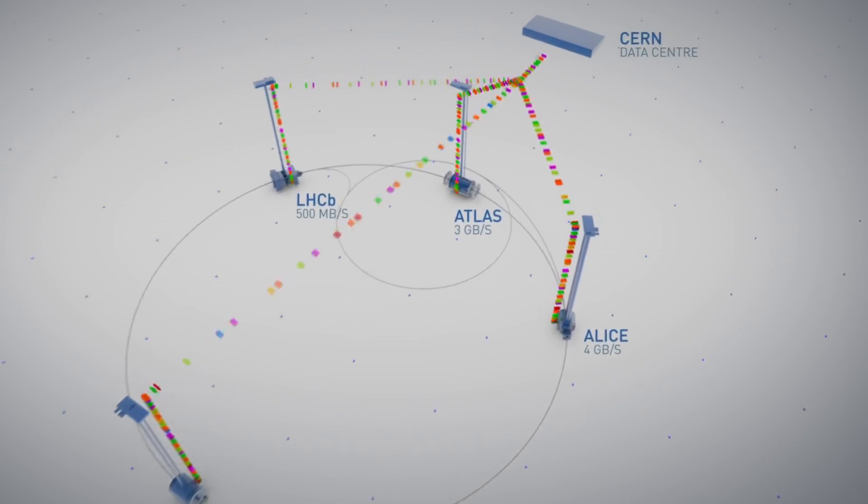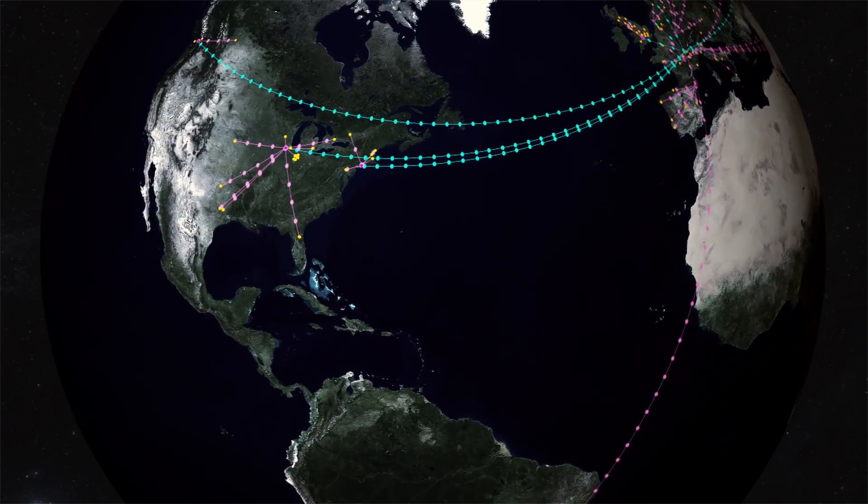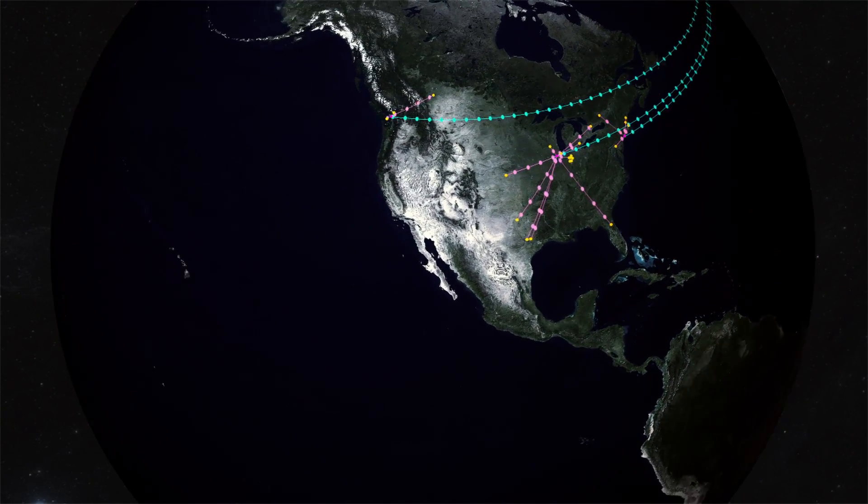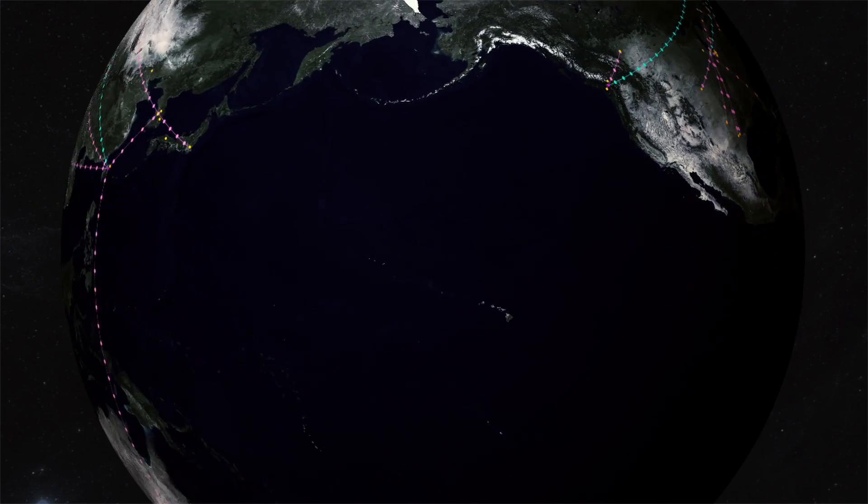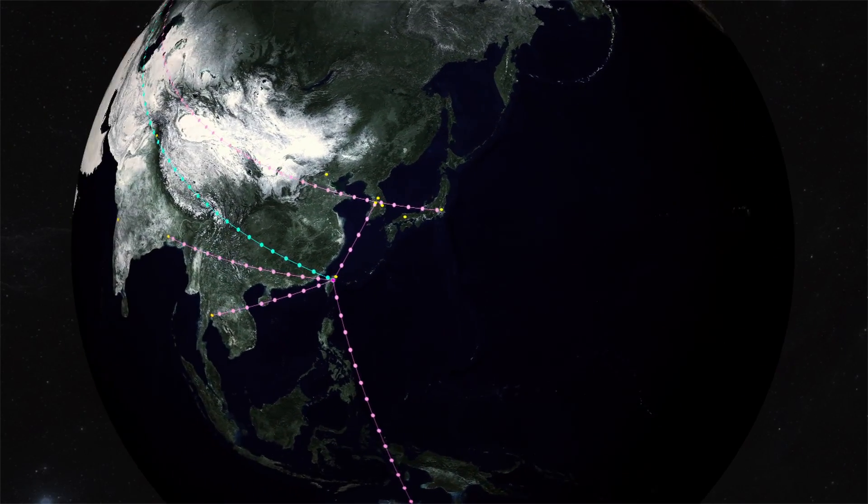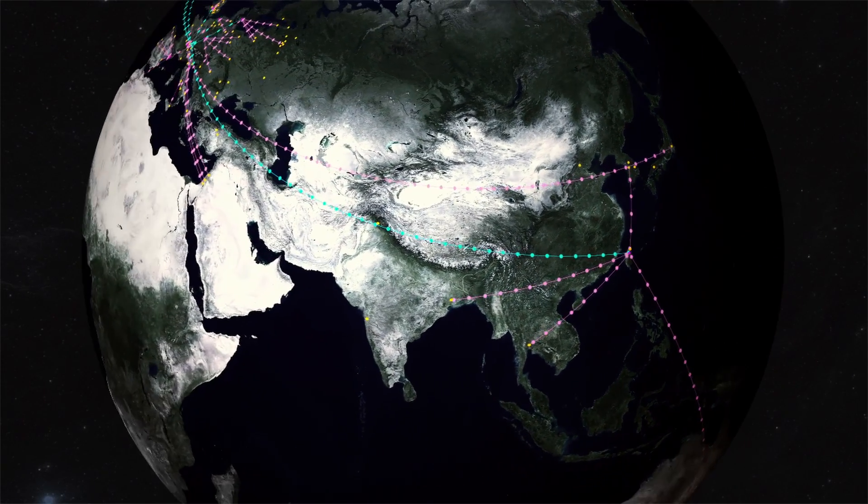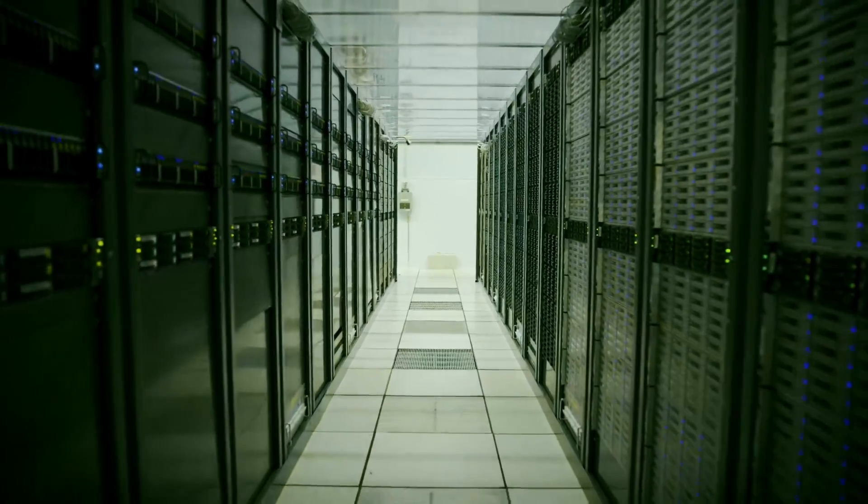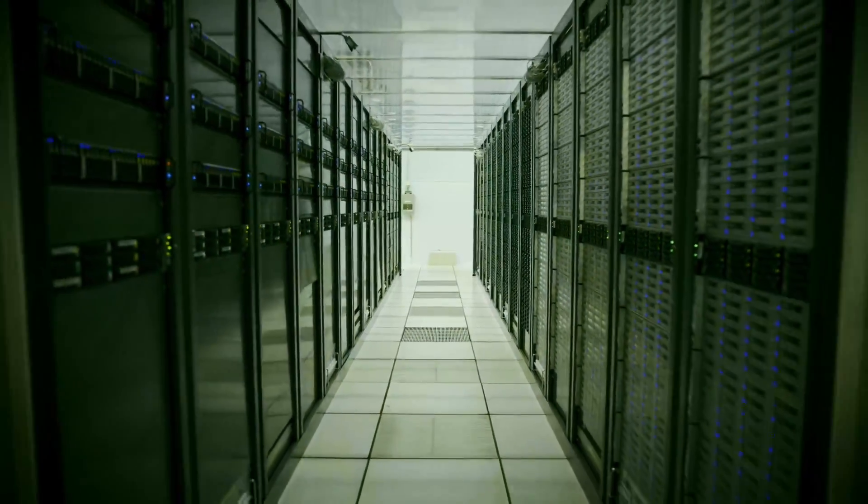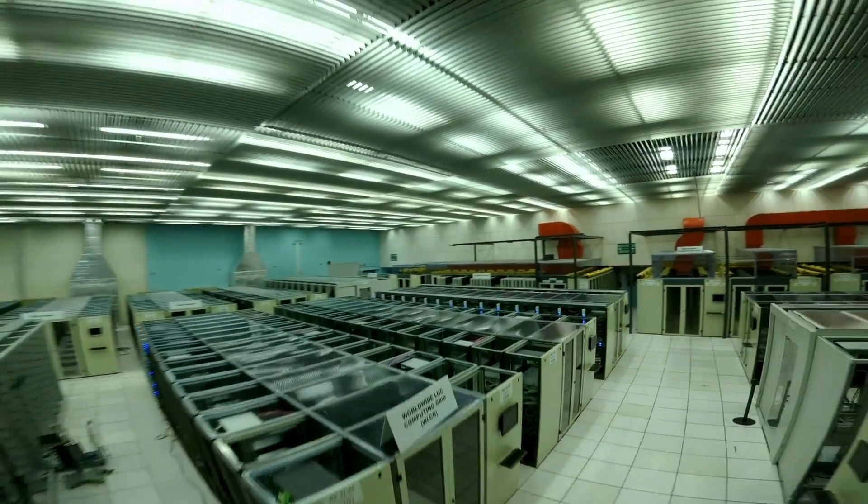Today, the World Wide LHC Computing Grid links up to around 170 computing centers in more than 40 countries to provide global computing resources to store, distribute and analyze the approximately 200 petabytes of data expected every year of operations from the LHC.